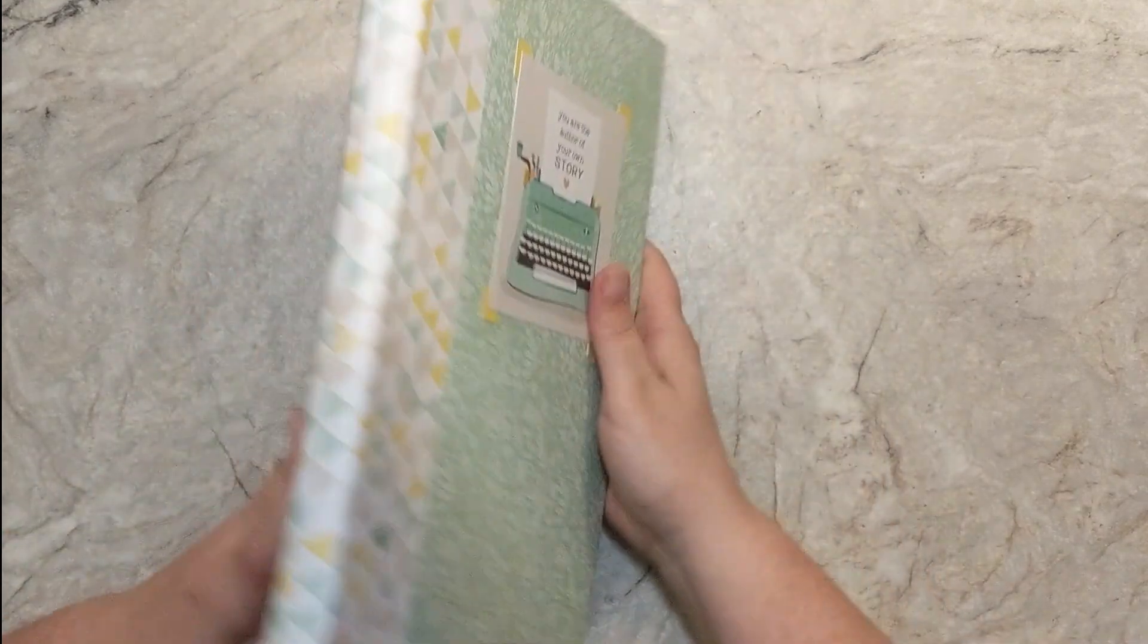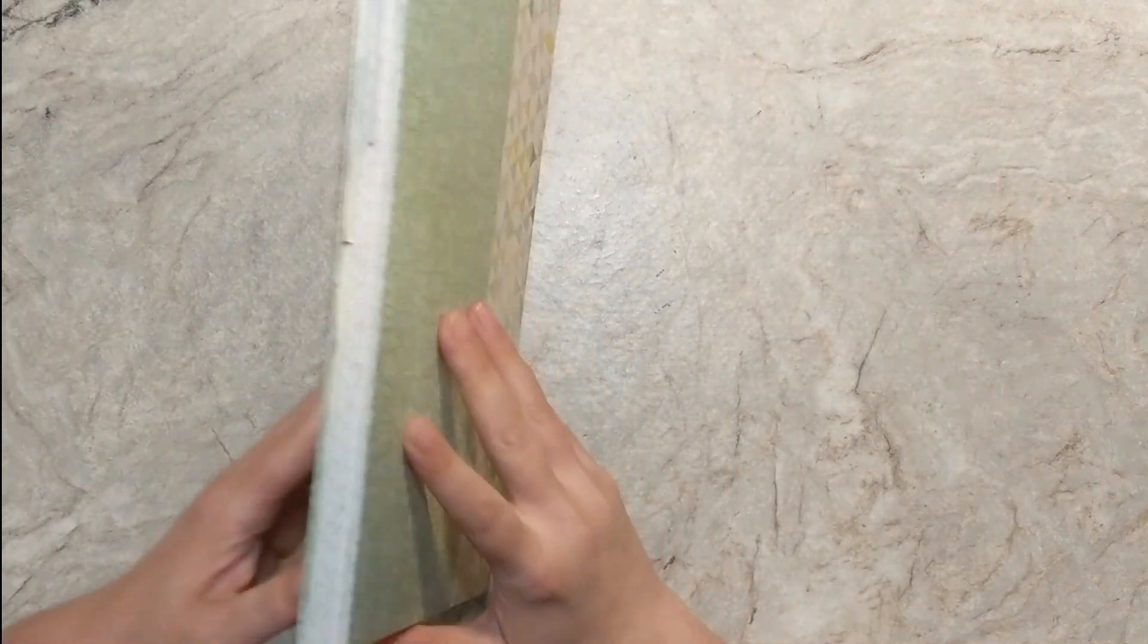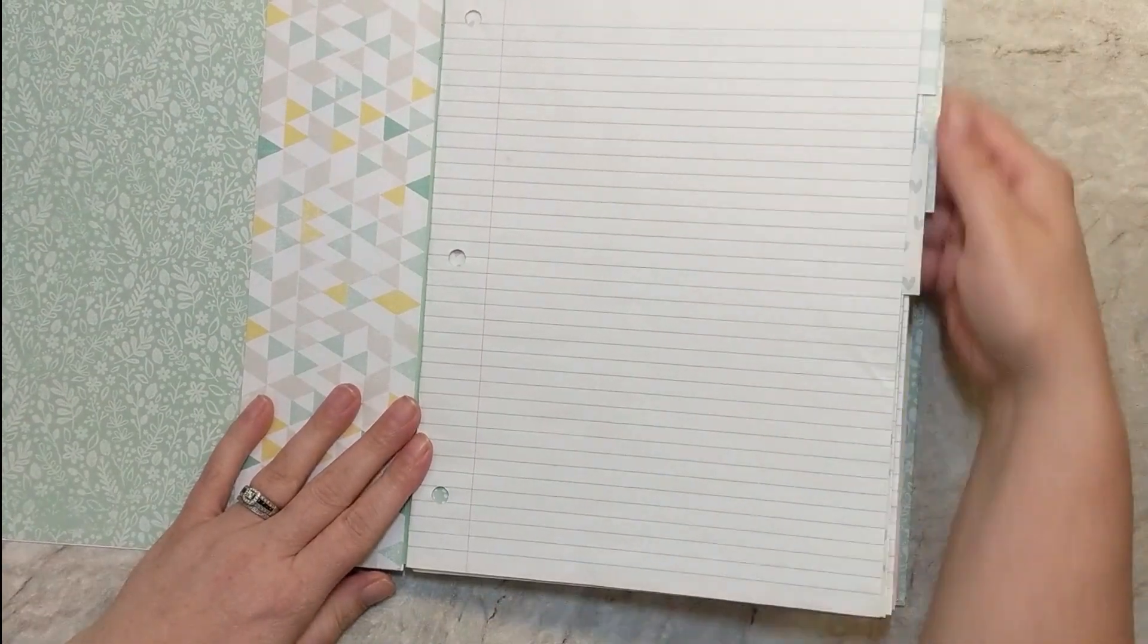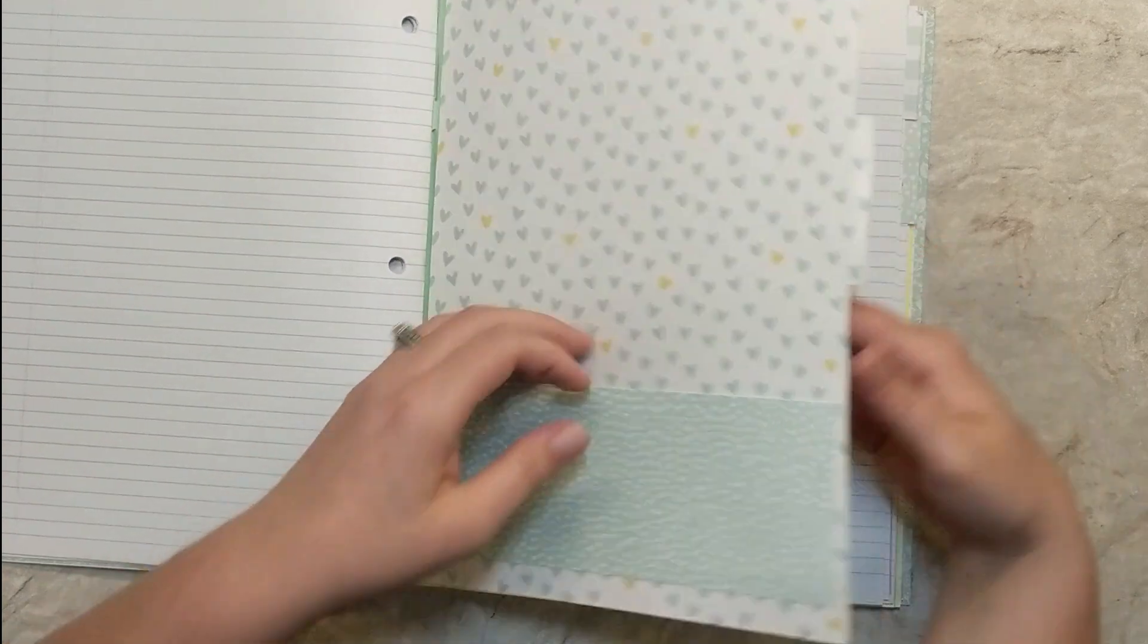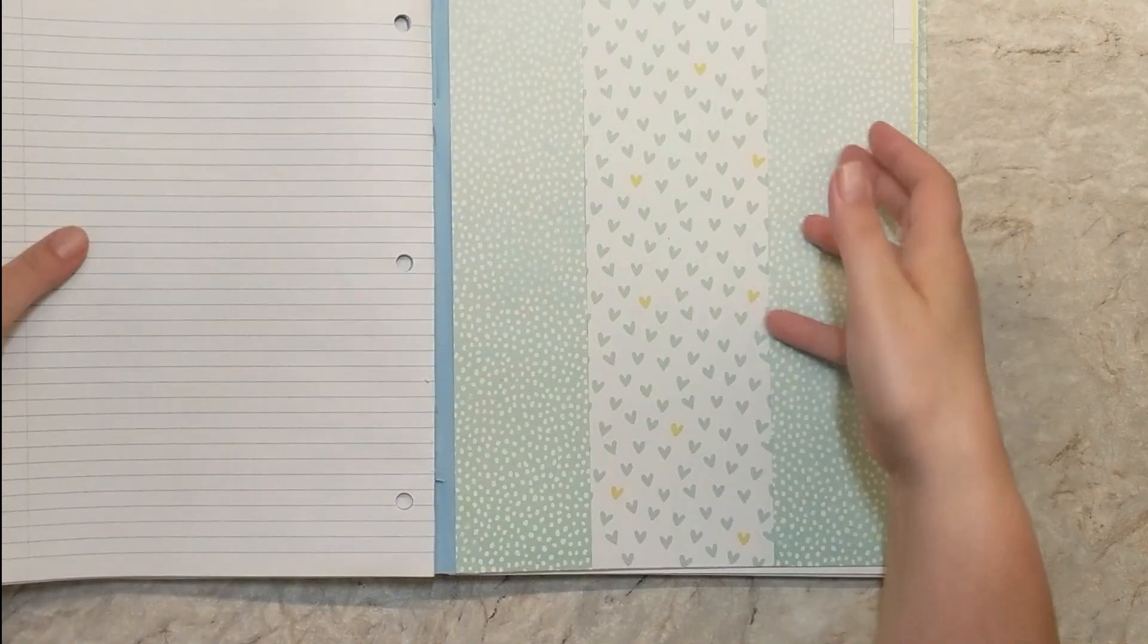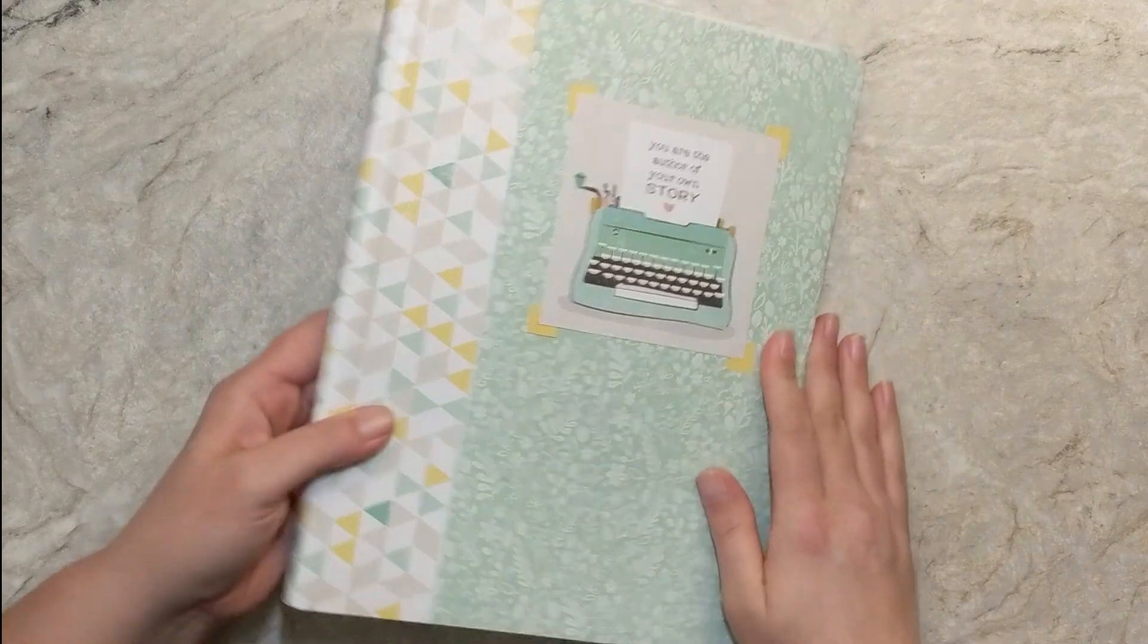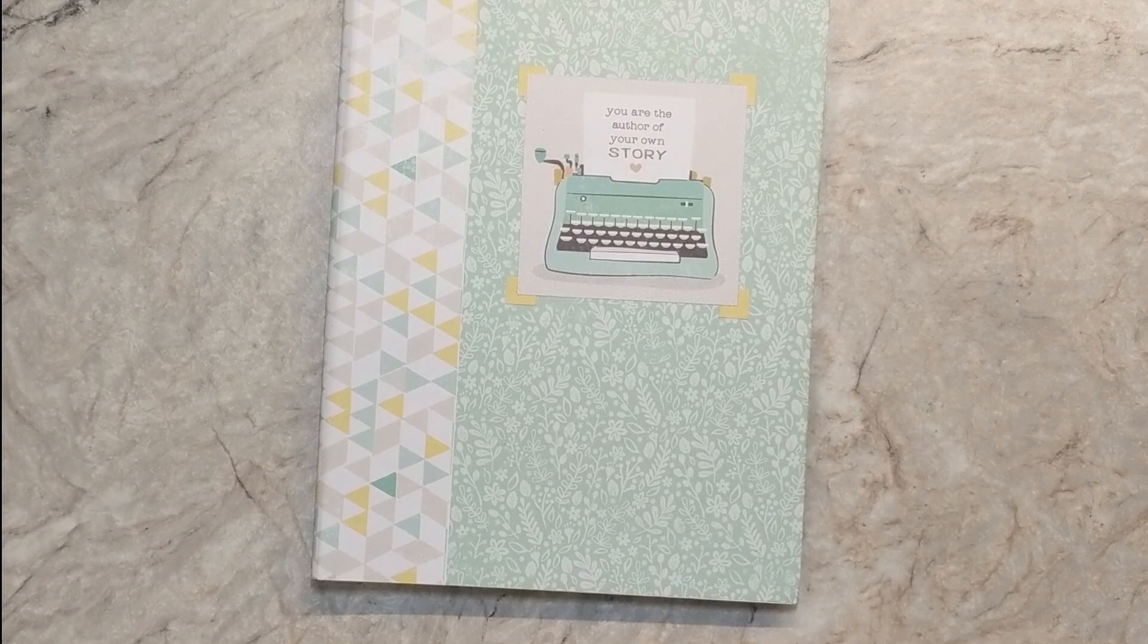Today's project is another installment of Chop It Up. I've got a really cool project to share with you showing you some ways to use up some of that 12 by 12 pattern paper. In today's sample I have a little package of cheap notebooks that I picked up on clearance for back to school. It was literally like 30 cents and you get like four notebooks in a pack. We're just going to alter these notebooks and create this beautiful little journal.